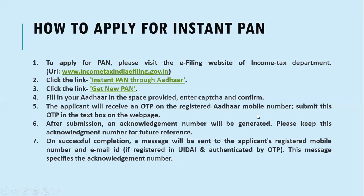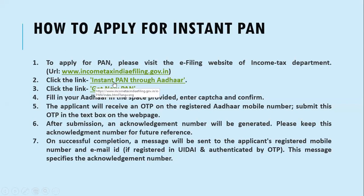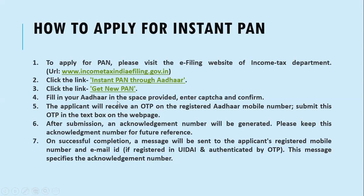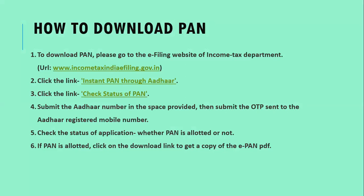Now, how to apply for instant PAN — there are seven steps to follow, and I will show you practically by opening the website. The web link is provided in the video description: incometaxindia.efiling.gov.in. First, click this link; on the left side you can find 'Instant PAN through Aadhaar'. Two buttons appear: 'Get New PAN' or 'Download PAN' — click 'Get New PAN'. Fill your Aadhaar card number, OTP, and complete the details — the first step is done.